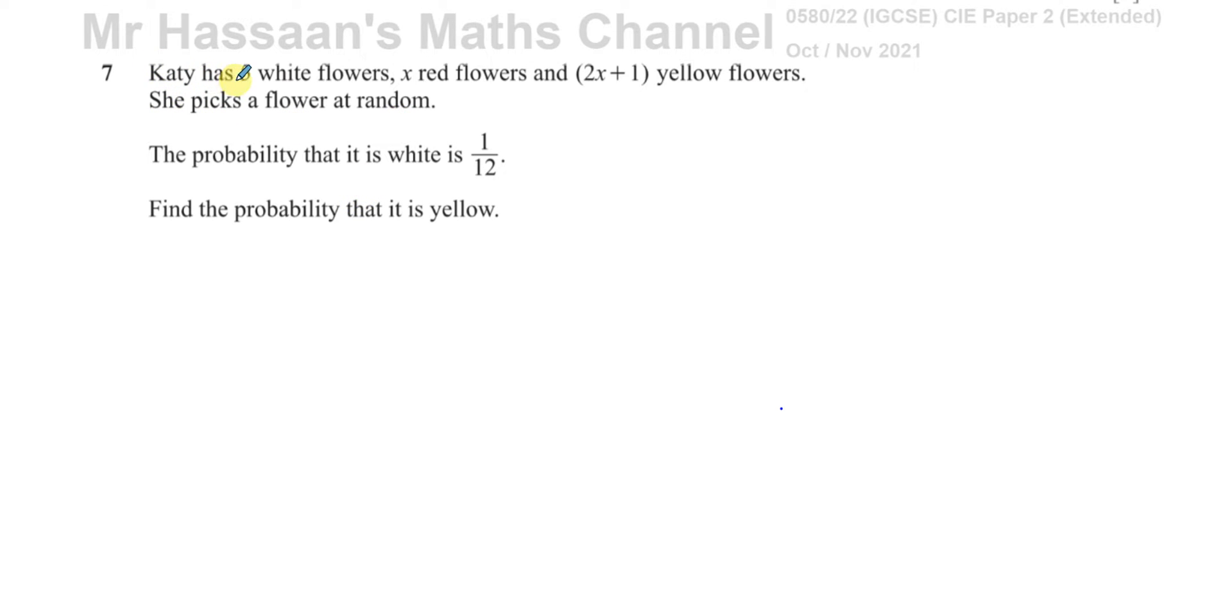Katie has 5 white flowers, x red flowers, and 2x plus 1 yellow flowers. She picks a flower at random. The probability that it is white is 1 twelfth. Find the probability that it's yellow.